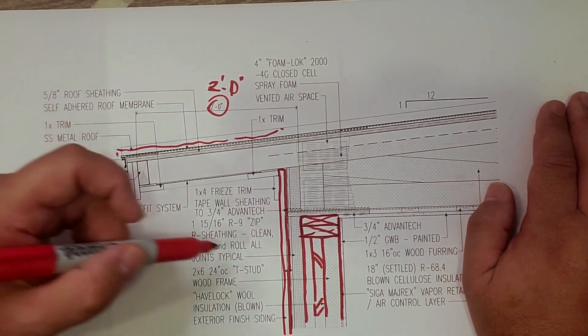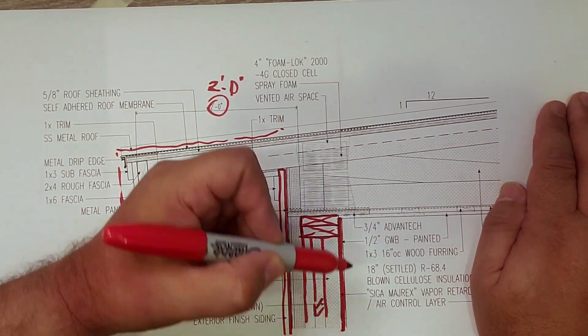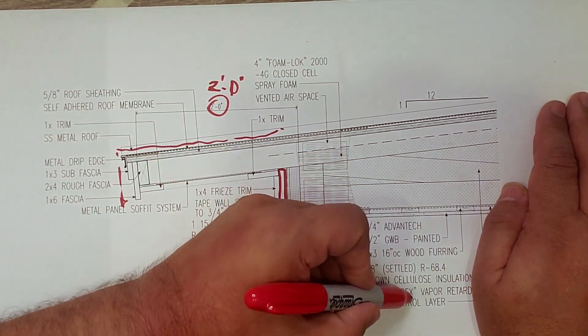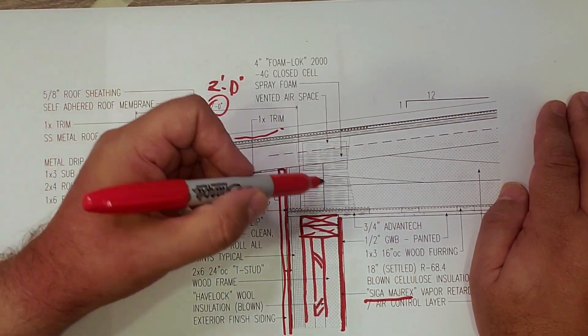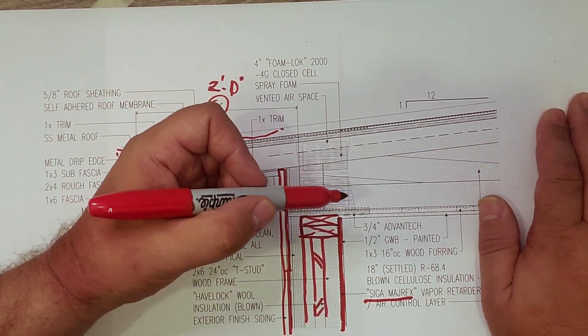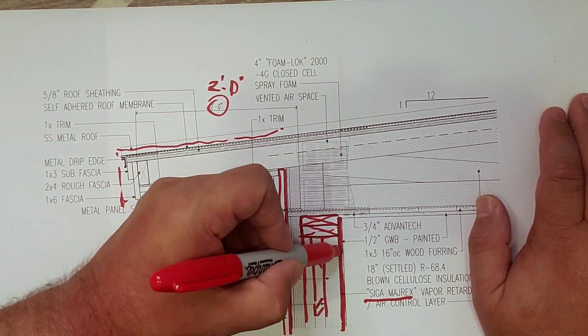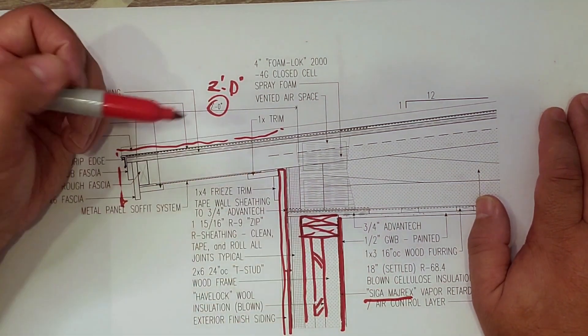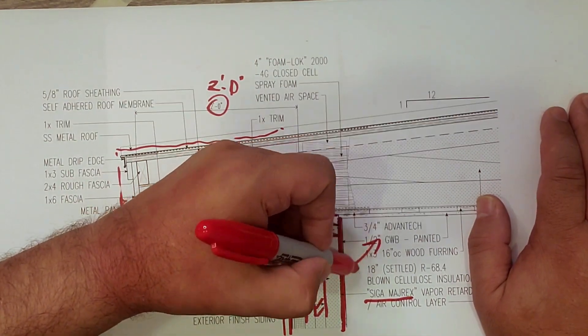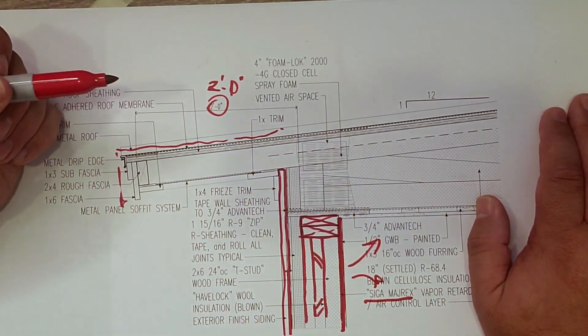For vapor, we have the Siga Majrex on the inside. You can see it labeled right there. It's a smart vapor retarder so that if the wall does get wet inside, that valve on the vapor retarder, if you will, opens up so that we get drying to the inside.